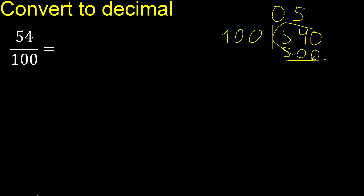540 minus 500 — subtract 40. There is no number that goes down, therefore complete. Always complete with 0. Place the decimal point here.